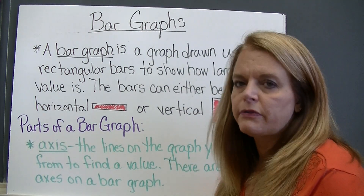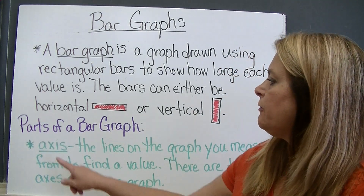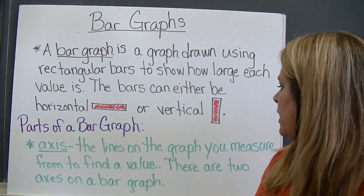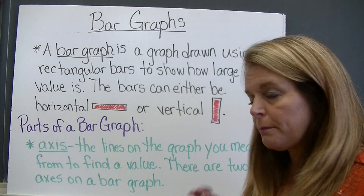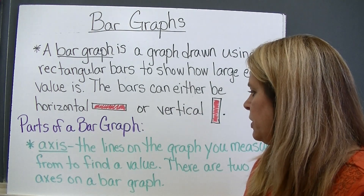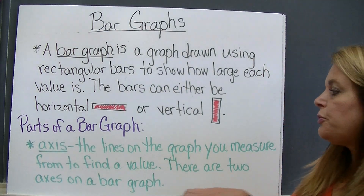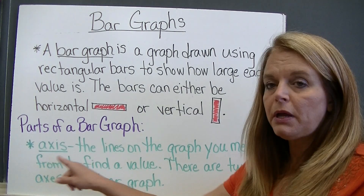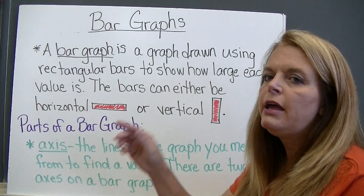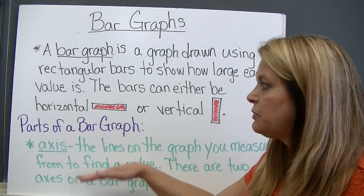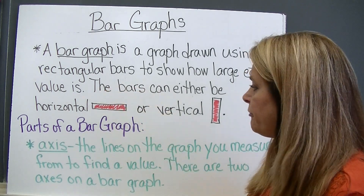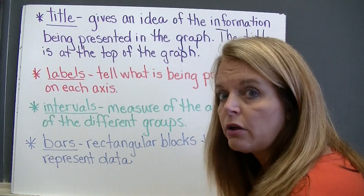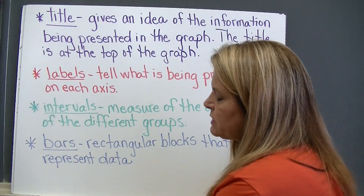So let's talk about the parts of a bar graph. The first thing we want to talk about is an axis. These are the lines on the graph you measure from to find a value. On every bar graph there are two axes — one will be horizontal and one will be vertical — and that's where you start to read the graph. We're going to look at a bar graph and see where all of these parts are, so let's get the definitions down first.